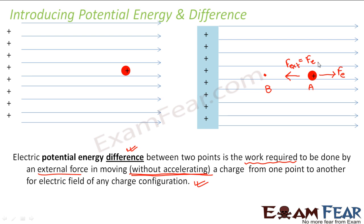When I say electric field of any charge configuration, I have always taken the example of a long conductor carrying positive charge, but this conductor can be anything. It can be a sphere carrying some charge or any arbitrary shape carrying an electric charge, and so the electric field can be of any configuration. So your potential energy difference concept will still remain the same.